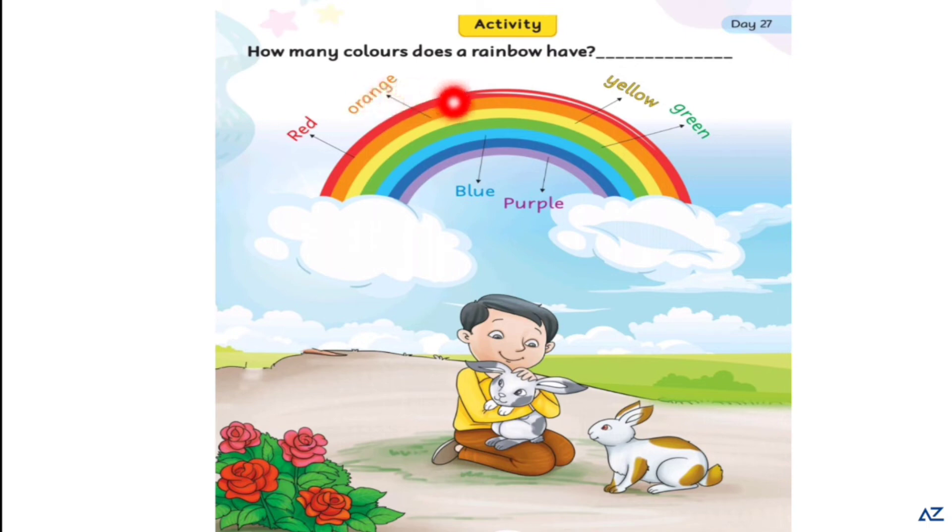Dear kids, how many colors does a rainbow have? A rainbow has 7 colors.